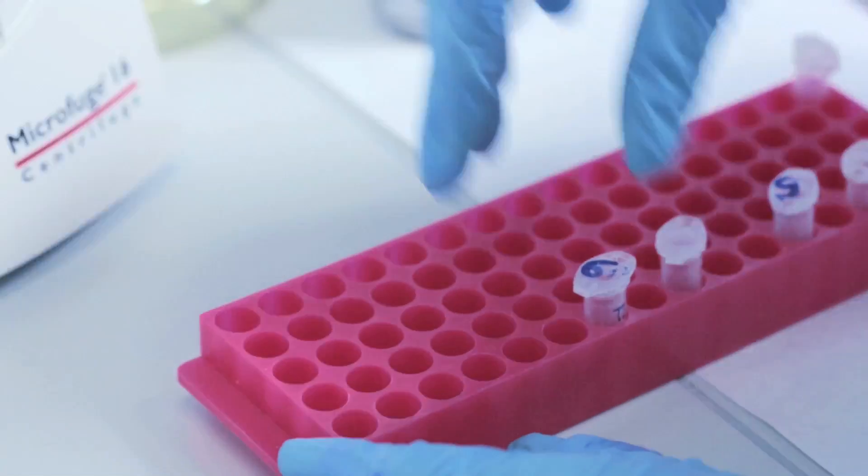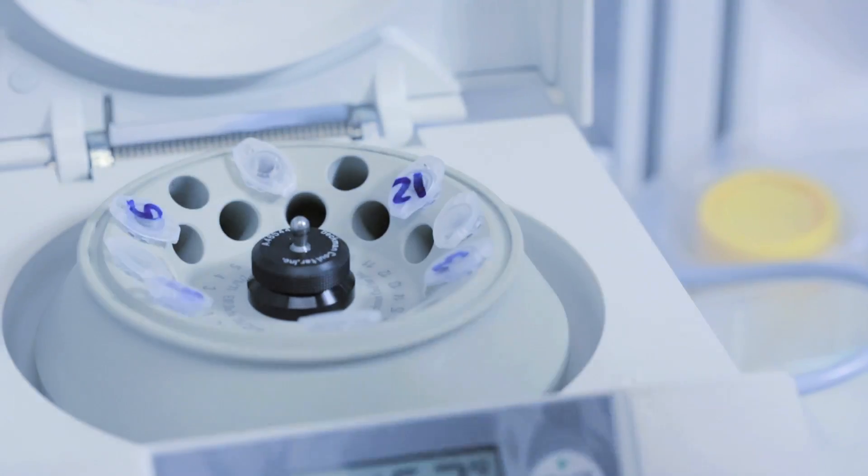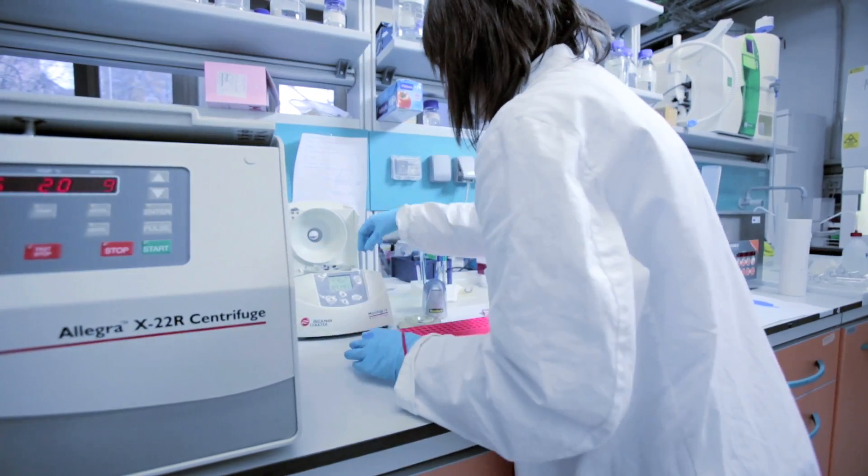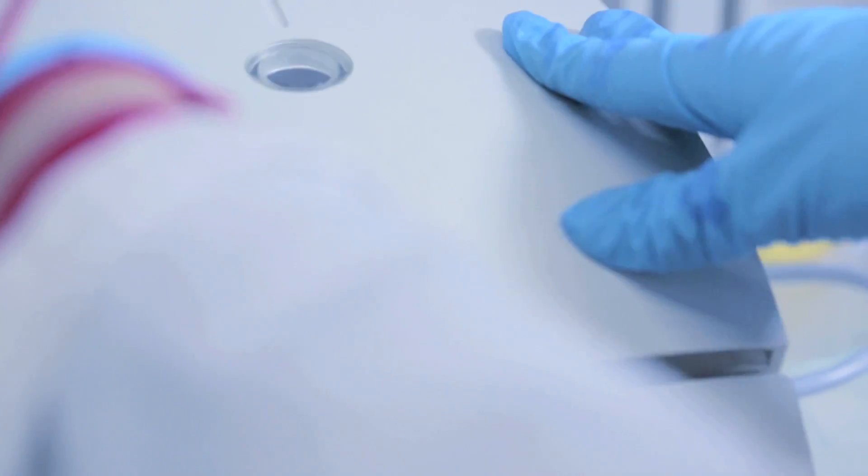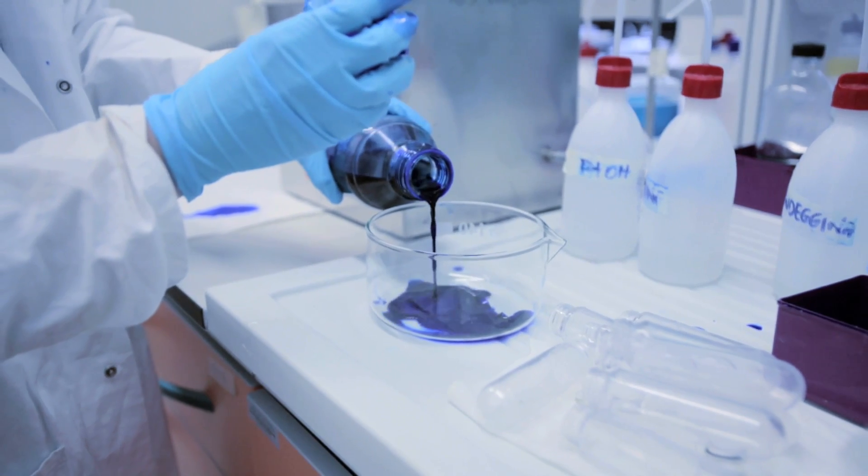After sonication, we can centrifuge our sample in order to separate the soluble fraction from the insoluble fraction. The protein of interest is present in the soluble fraction. Then we can load our sample on an SDS gel to check the band corresponding to the protein that we are studying.